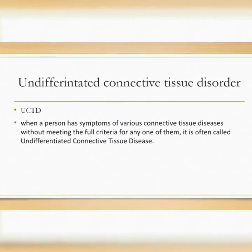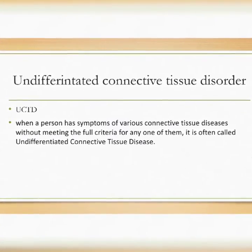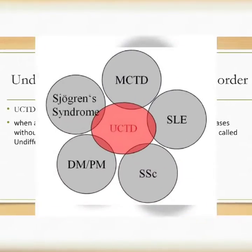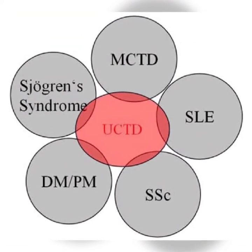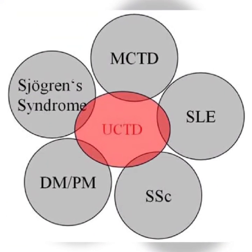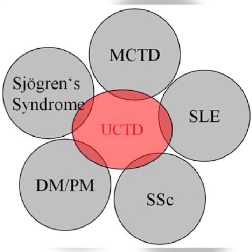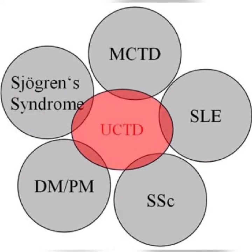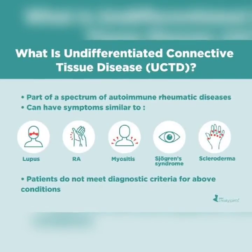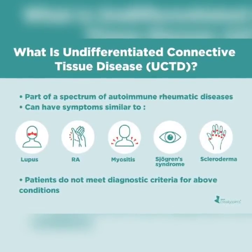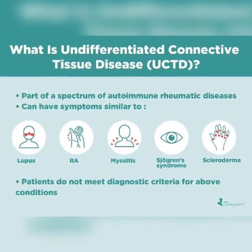Moving on to Undifferentiated Connective Tissue Disorder. When a person has symptoms of various connective tissue diseases without meeting the full criteria for any one of them, it is called Undifferentiated Connective Tissue Disease. The key point is that full criteria are not met in Undifferentiated Connective Tissue Disorder.